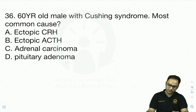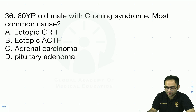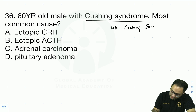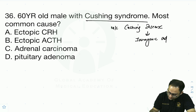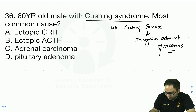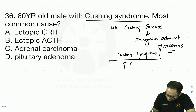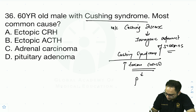A 60-year-old male with Cushing syndrome: the most common cause of Cushing syndrome is iatrogenic administration of steroids. Cushing syndrome means excessive cortisol — coming from the pituitary in endogenous causes.